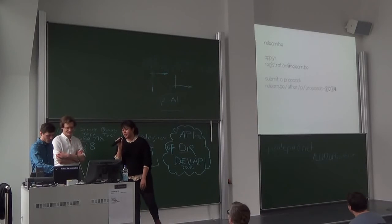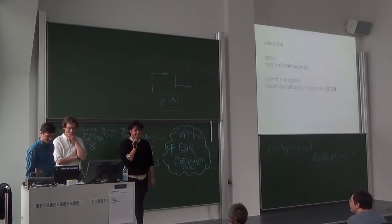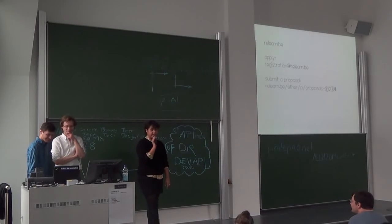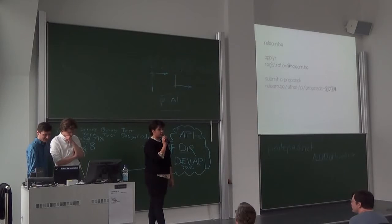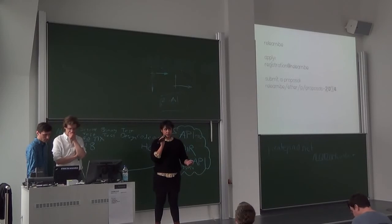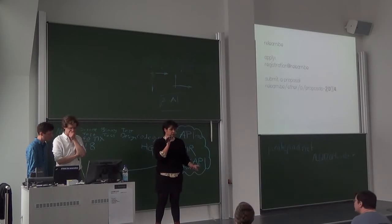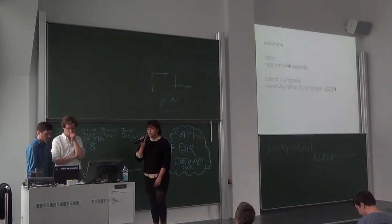If you want to participate in this summer school edition, you have to send an email to registration explaining a bit about you, what you're doing, what excites you in relearning something, and why you want to come to this summer school. The deadline is the 25th of April and we will give an answer on the 5th of May.